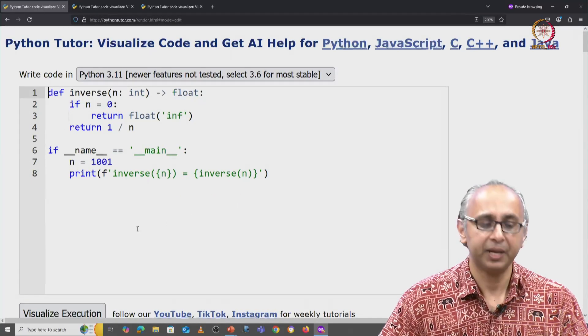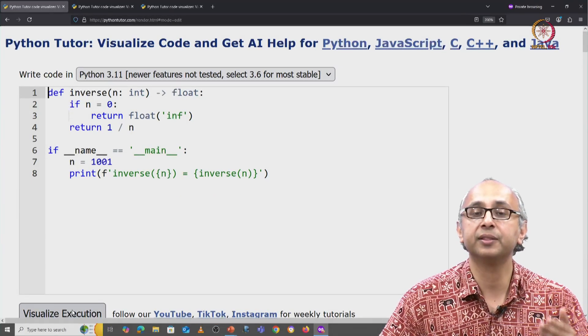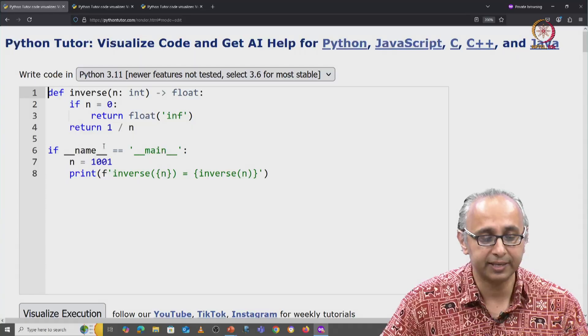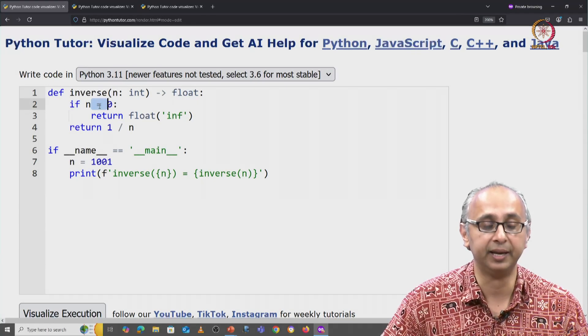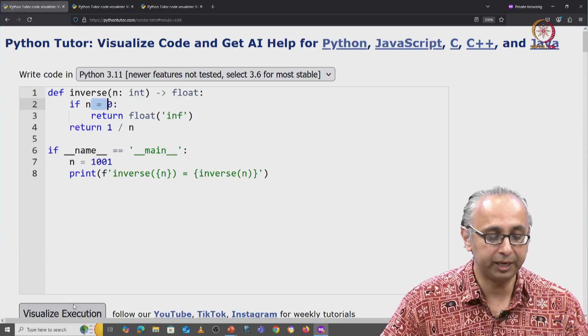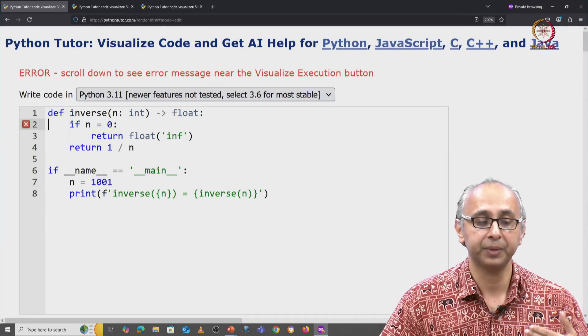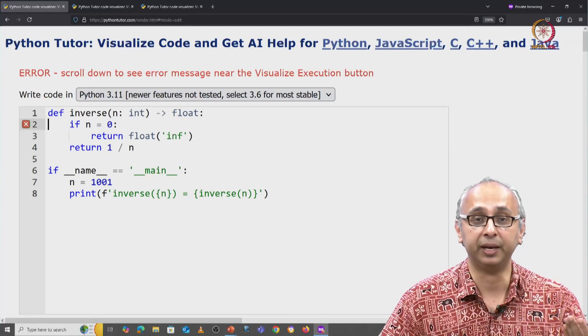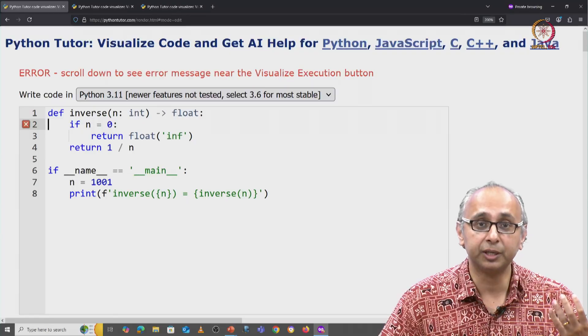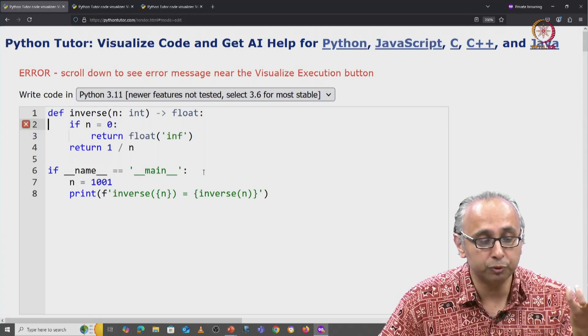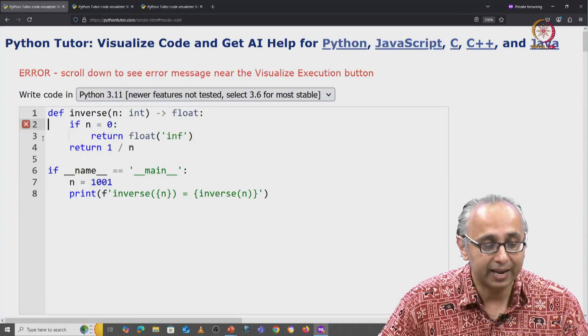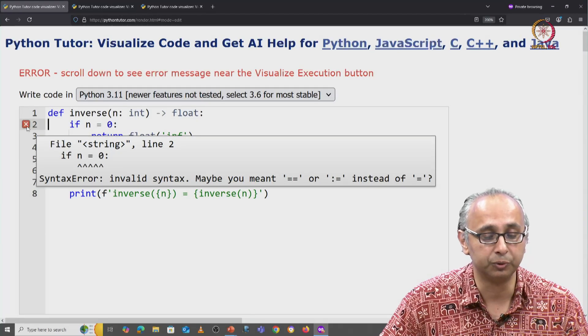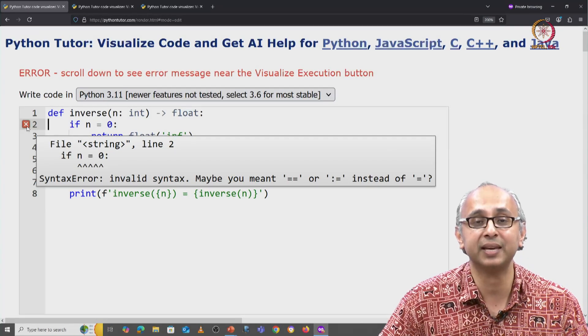Here we are on Python Tutor. Let us try and visualize this buggy code which has an assignment statement instead of a test for equality on line 2. When we click on visualize execution, the interpreter is running and the interpreter was trying to complete this definition of this function and it failed on line 2. It gave us this syntax error.